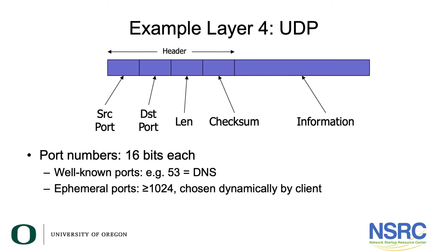An example of layer four is UDP, the User Datagram Protocol. This is one of the protocols that doesn't provide any delivery guarantees. All it does is add a few extra fields inside the datagram: a source port number, a destination port number, a length, and a checksum — so it will detect transmission errors — and then the payload.